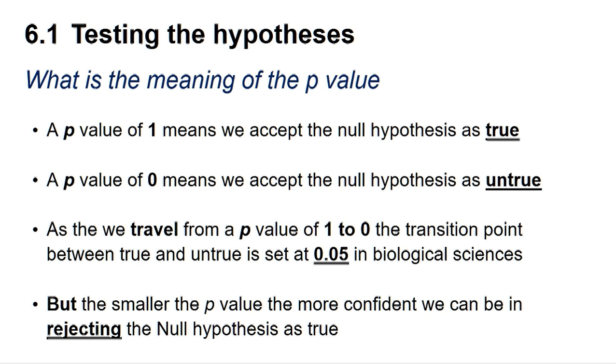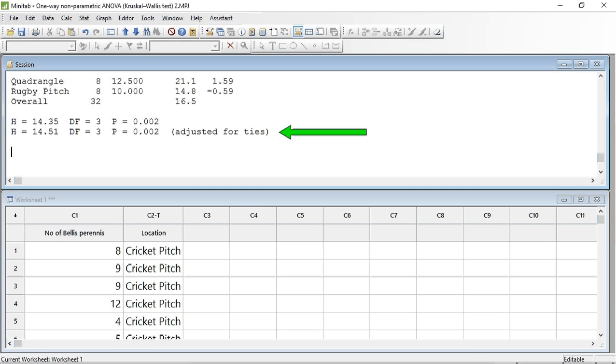The smaller the p-value below 0.05, the more confident we can be in rejecting the null hypothesis. So the p-value of 0.002 suggests there is a significant difference in the density of Bellis perennis in the four grass areas we investigated.